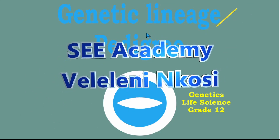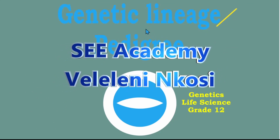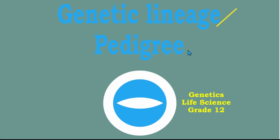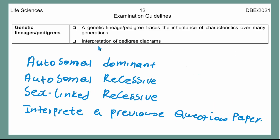Hello Grade 12s, welcome to our channel. My name is Velilene Nigosi. In this lesson we will learn about pedigrees, which is part of genetics in Life Sciences Grade 12. The content of this video: I will interpret pedigree diagrams, explain autosomal dominant and autosomal recessive, sex-linked recessive, and interpret a previous question paper that contains a pedigree.